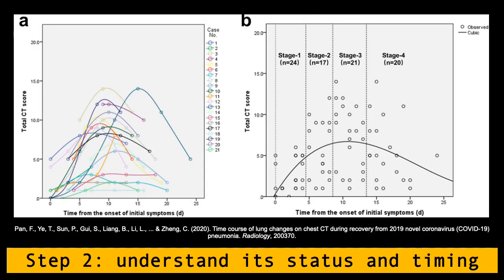In a study in 2020 on the time course of lung changes on chest CT, it peaks anywhere between stage two and stage three, which is anywhere between five and 10 days from the onset of actual symptoms. More importantly, the CT score can range at its highest peak between eight to 16 days.